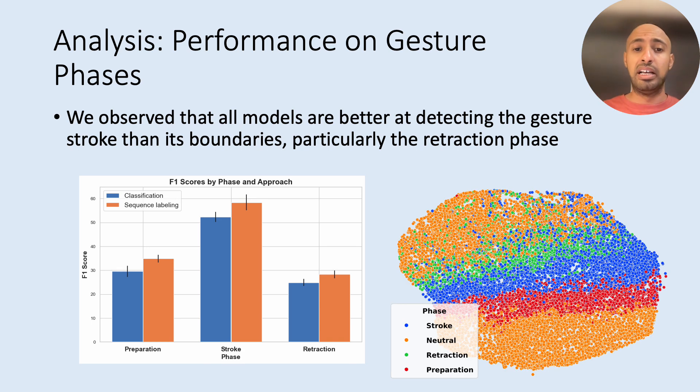We also notice that the model representation shows that the model is aware of these sequential phases. For example, here the yellow points represent the neutral movements where the red are for the preparation and it's followed by the stroke and then retraction and again for the neutral movement. Here we depict or visualize this kind of sequential movements.